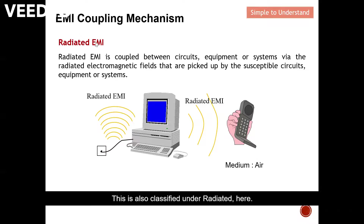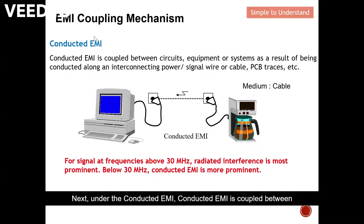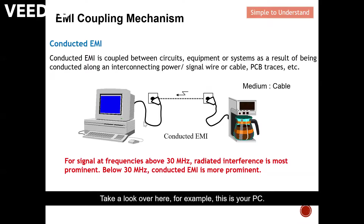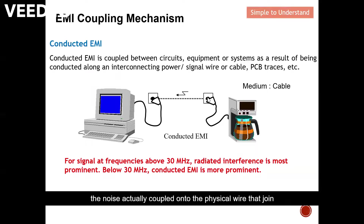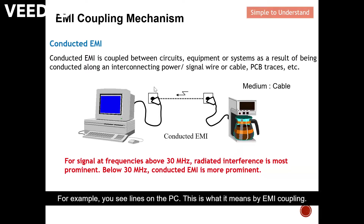Conducted EMI is coupled between circuits, equipment, or systems as a result of being conducted along a cable, such as a power cable. For example, take your PC — if someone makes coffee using a coffee maker that shares the same power supply, when the coffee maker is activated it generates a lot of noise. That noise couples onto the line and, because they share a common power source, it travels along the physical wire and affects your PC — for example, causing interference on your display.